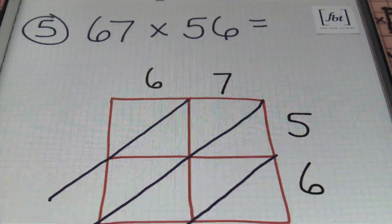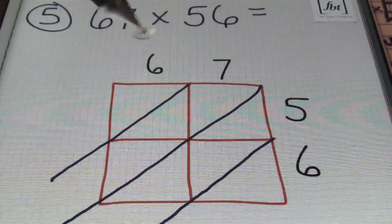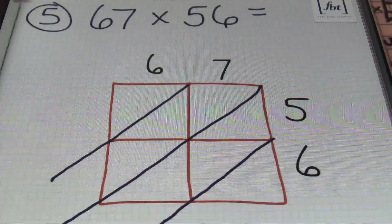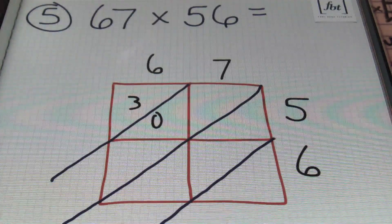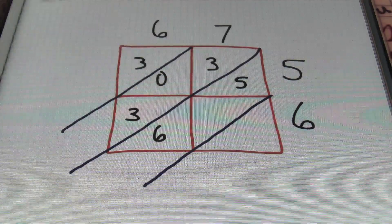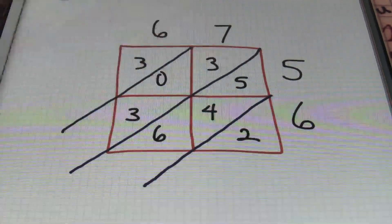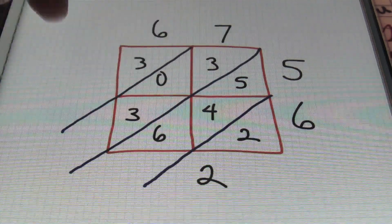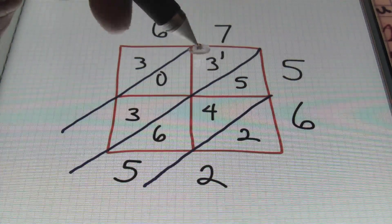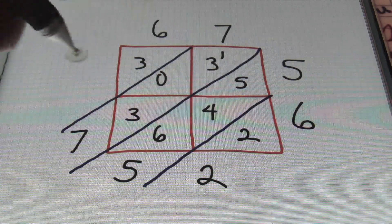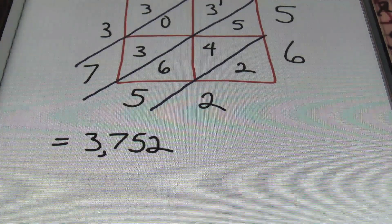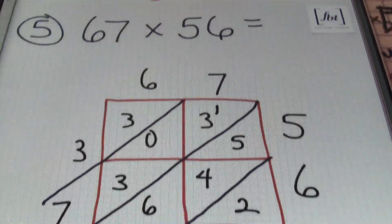Here we have another example just to show you how quick the process can be: 67 times 56. I've set up a two-by-two — two columns for the digits in 67, two rows for the digits in 56. Six times five is 30, so three and zero. Seven times five is 35, so three and five. Six times six is 36, so three and six. Seven times six is 42, so four and two. Bringing down this two, then five plus four plus six gives me 15 — bring down the five and carry the one. One plus three plus three gives seven. Bring over the seven, then bring over the three. No decimals, so the answer is 3,752.